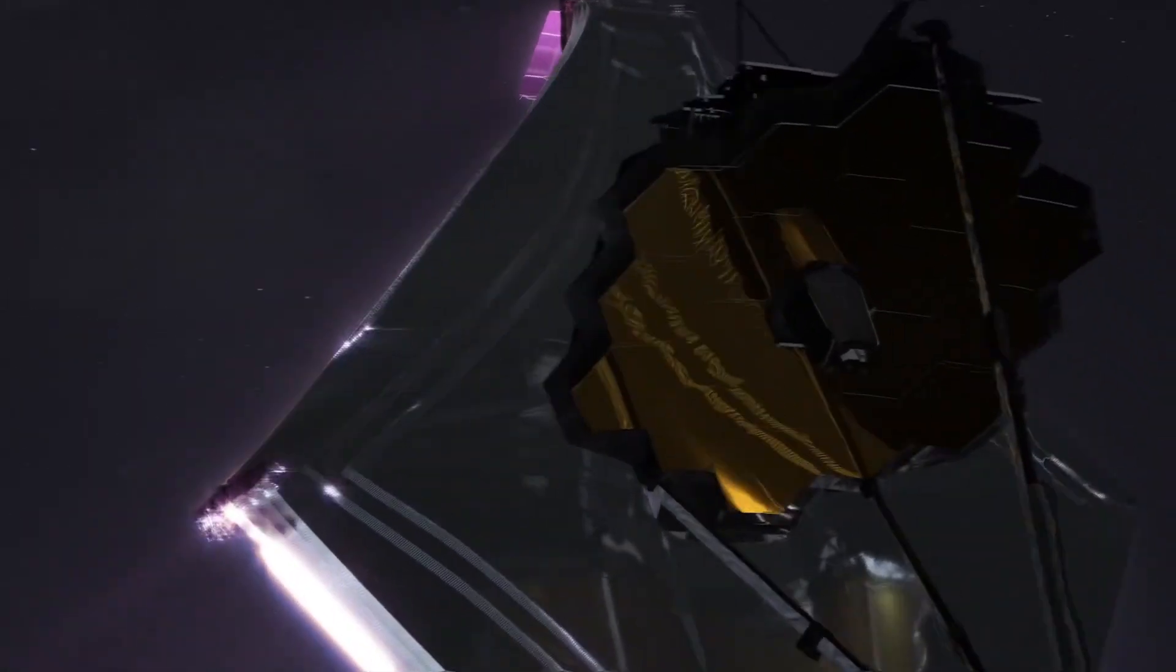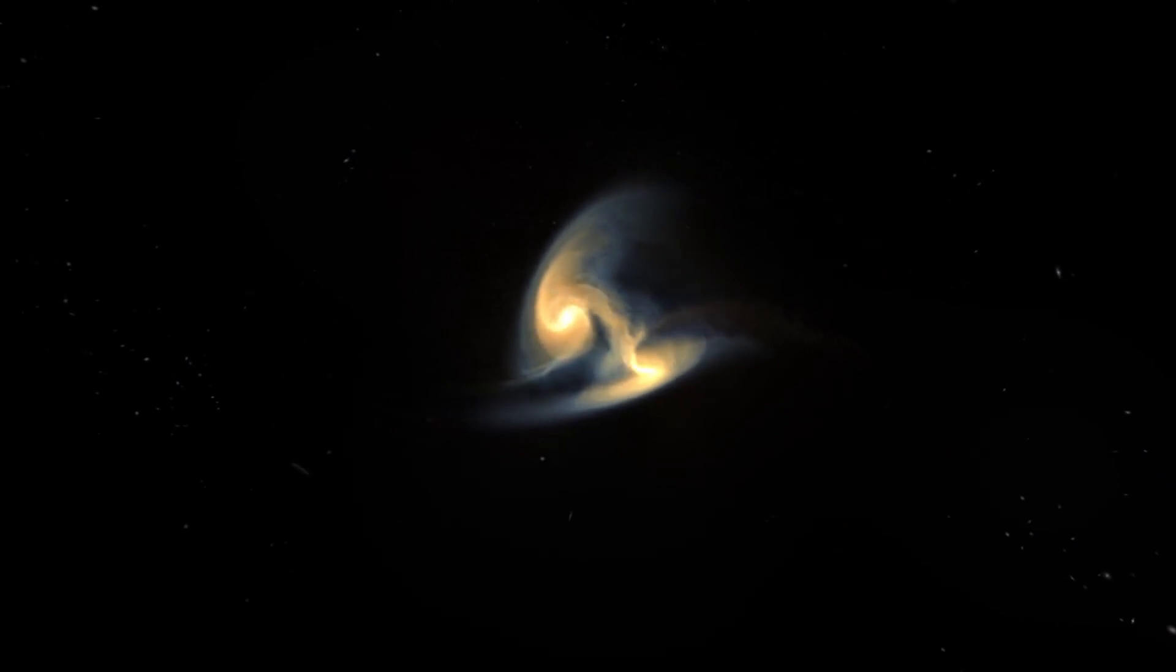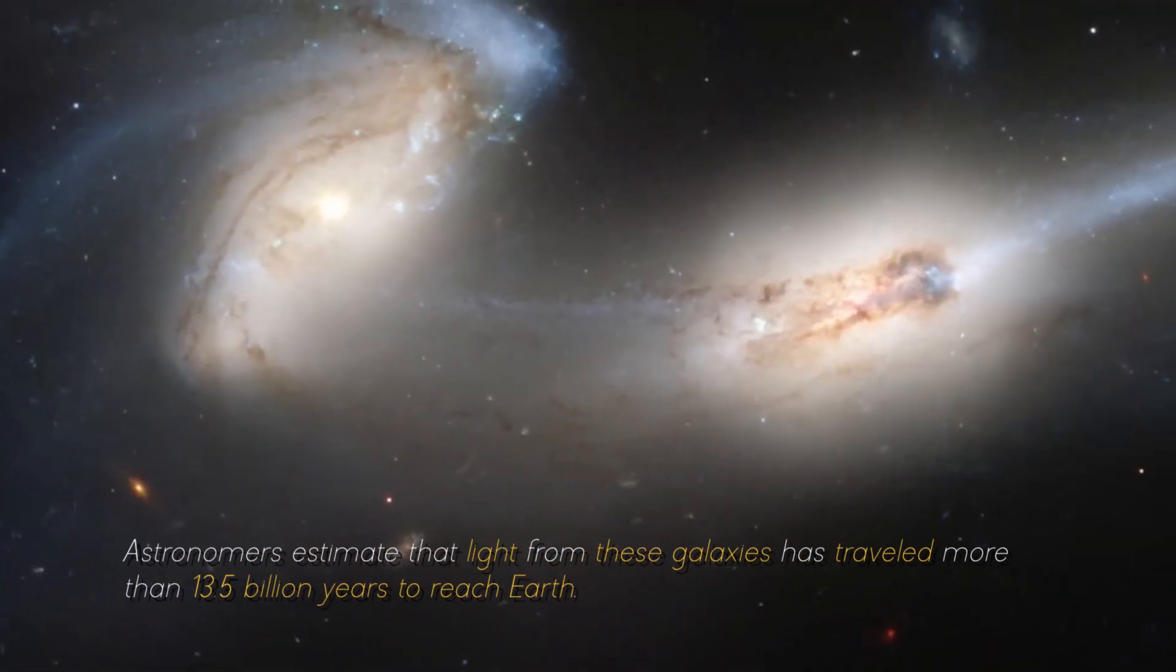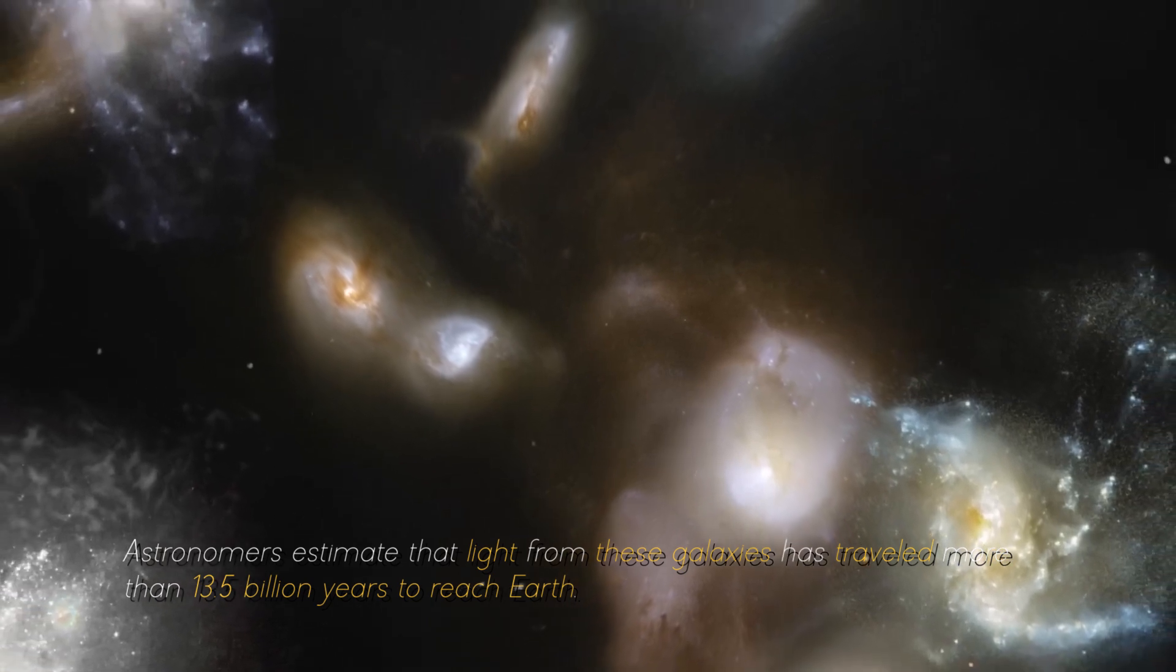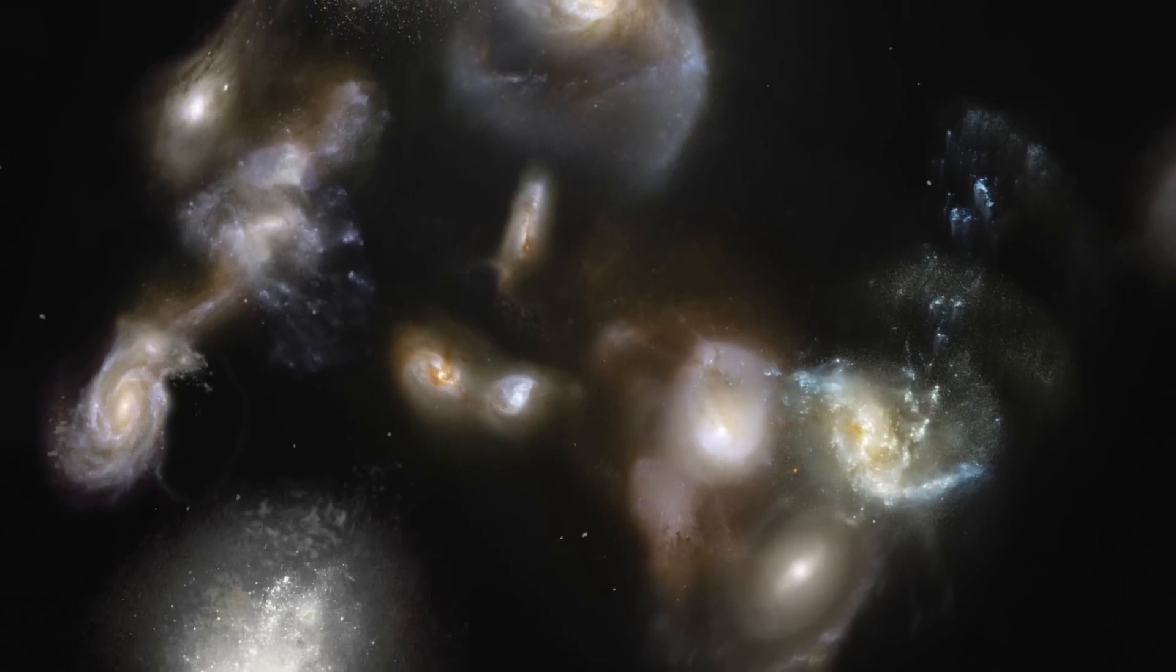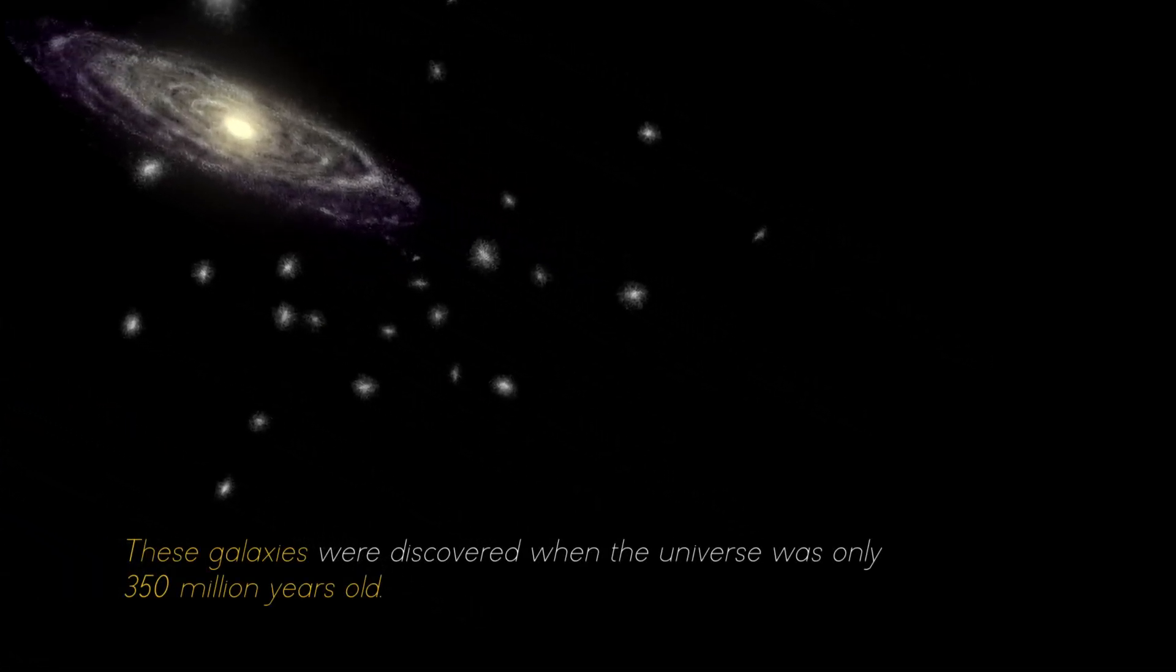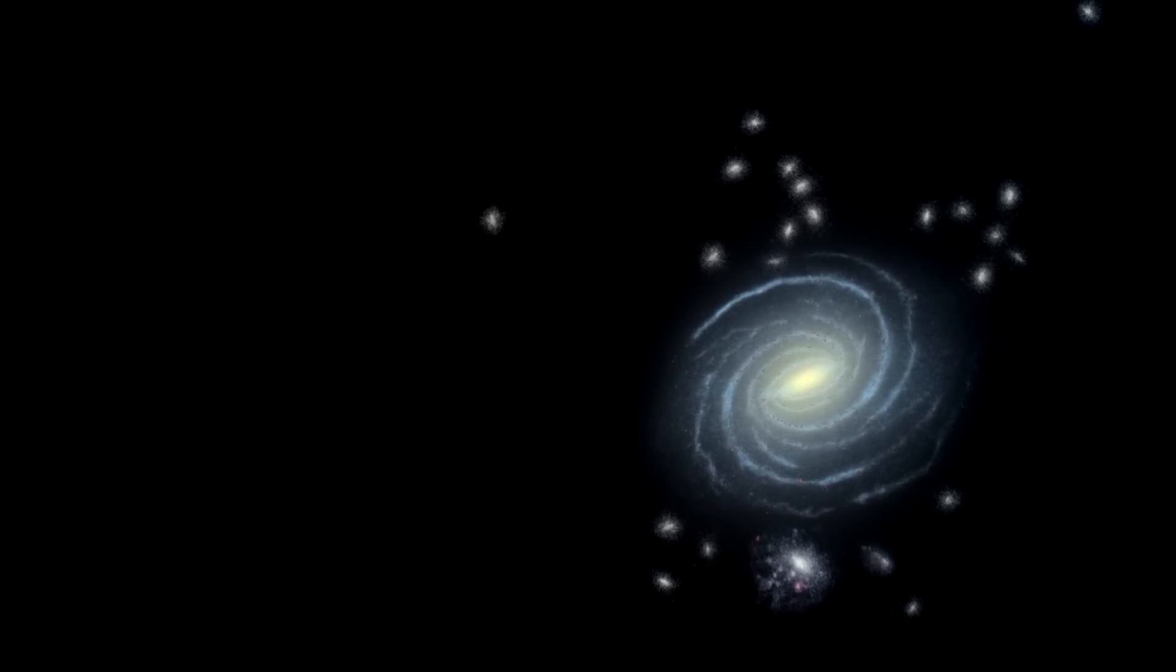Amazingly, the James Webb Space Telescope confirmed that these ancient galaxies are real. Thanks to this revolutionary telescope, we can now observe the oldest galaxies ever seen. Astronomers estimate that light from these galaxies has traveled more than 13.5 billion years to reach Earth, giving us a glimpse into the distant past of the universe. These galaxies were discovered when the universe was only 350 million years old, shedding light on how quickly the first generations of galaxies emerged.